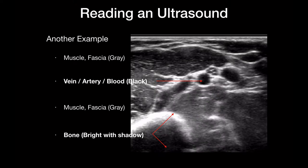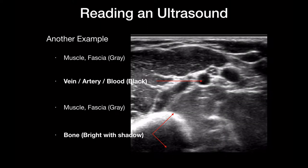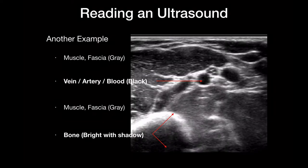Here's another example — this is an ultrasound of an arm. The black circles are fluid, so those are blood vessels — artery and vein. Here's a really bright reflector — that's bone, specifically the humerus. The intermediate density tissue is muscle, which has lots of blood flow so it's pretty dark. The bright areas surrounding and encapsulating the muscle are fascia — fascia doesn't have many blood vessels so it's pretty bright, but not as bright as bone.